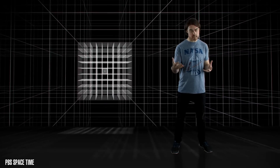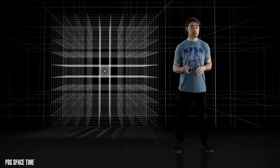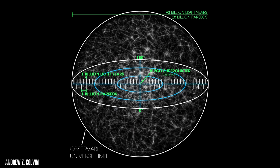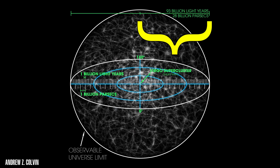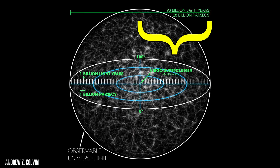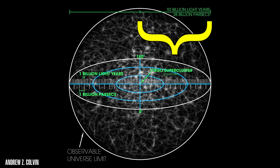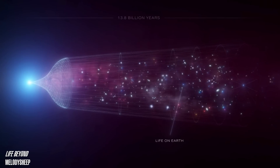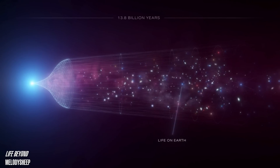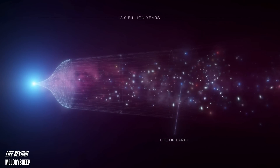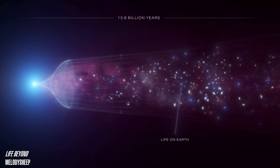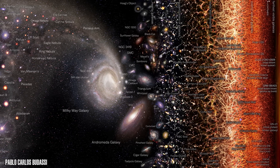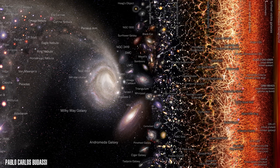This is why the radius of the observable universe is over 46 billion light years, even though the universe itself is only 13.8 billion years old. And the whole universe, beyond our cosmic horizon, is possibly trillions of light years across.